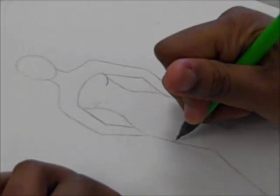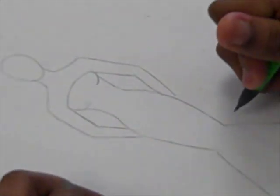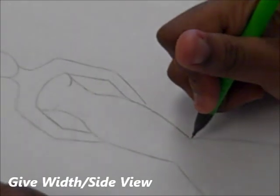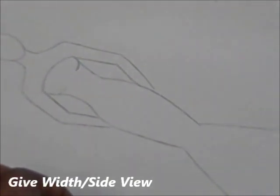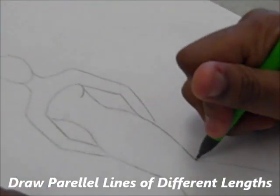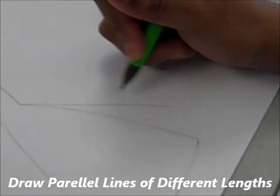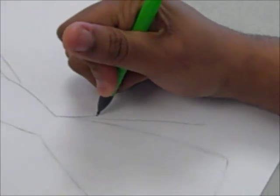You can erase all lines that you don't need at this moment. Now to give your dress more sort of like a width or just to see like a side view of the dress, you can extend parallel lines on the side of the dress but make sure they're not the same length.